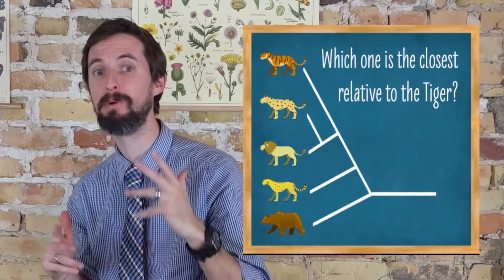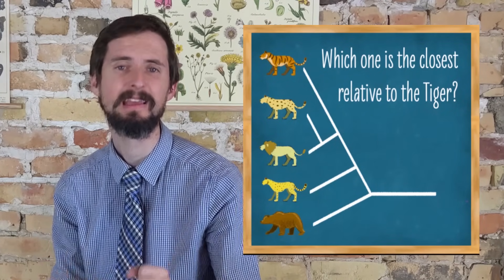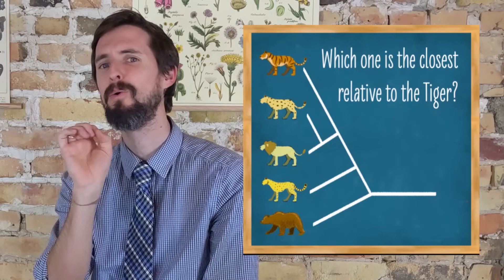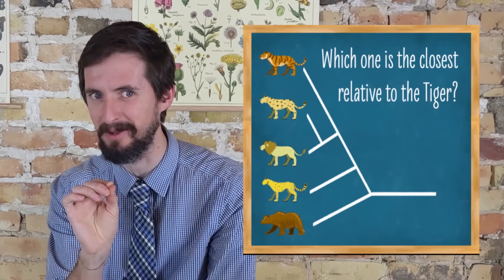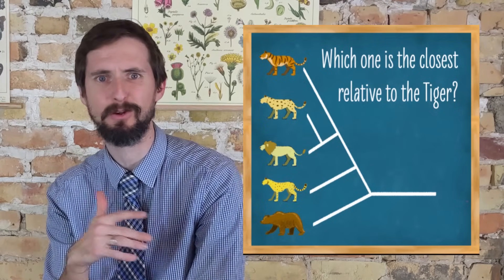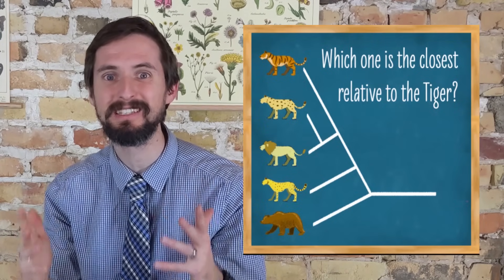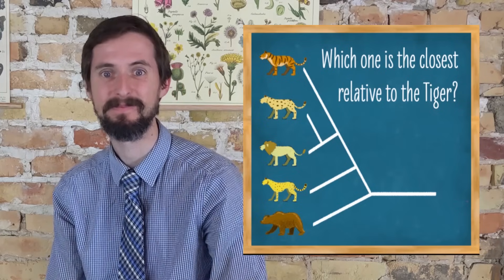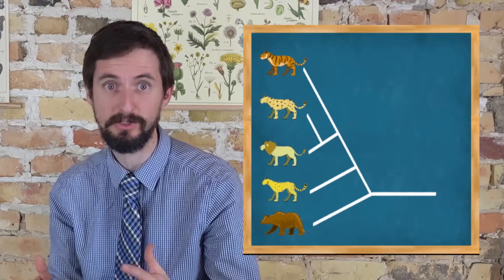This is where we need to remember what we discussed with the family tree. There are a million wrong ways to interpret a phylogenetic tree, and only one is the right way. So when I'm trying to answer the question, which is the closest living relative to the tiger, I need to remember the one right way.